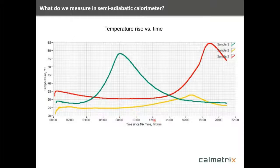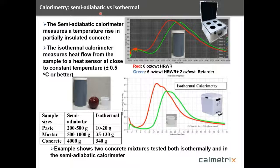In the semi-adiabatic, we measure temperature as a function of time, looking at the concrete curing reaction. The curves look similar to isothermal curves, but the semi-adiabatic is considered a qualitative technique. We cannot integrate under the curves to calculate total heat of reaction, but we can glean qualitative information from curve shapes and comparisons. Comparing the two types: semi-adiabatic measures temperature rise in a partially insulated container and is qualitative, while isothermal controls temperature around the sample and measures heat flow as a function of time — making it quantitative.